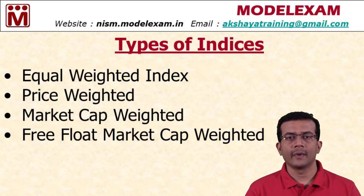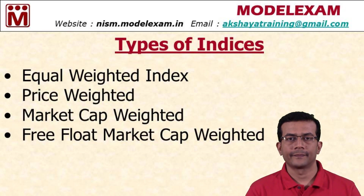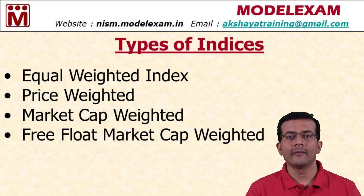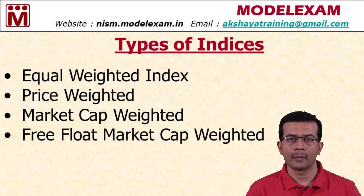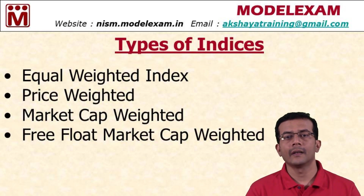Indices like Sensex or Nifty follow a method called the free float market cap weighted index. But in the case of an equal weighted index, all the components in an index will have equal weightage. Say our index has 30 stocks — all those 30 stocks will have the same weightage, irrespective of the size of the company or the share price.